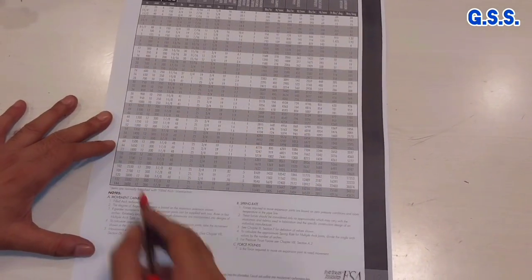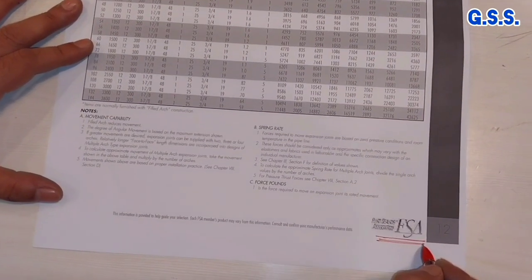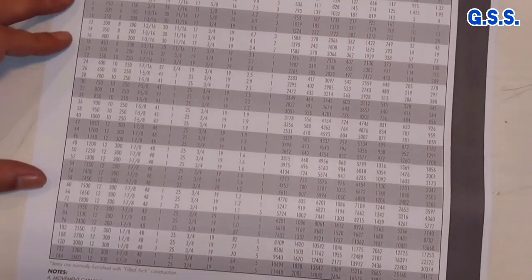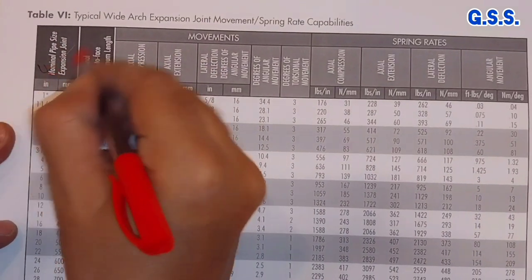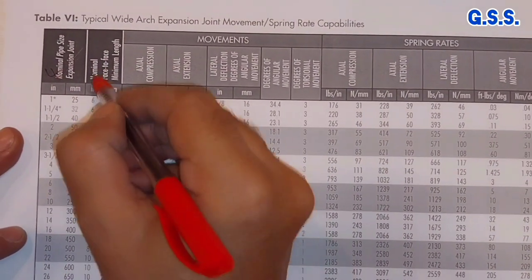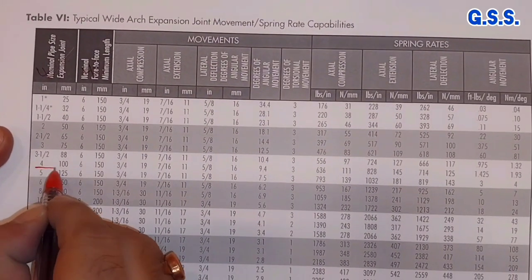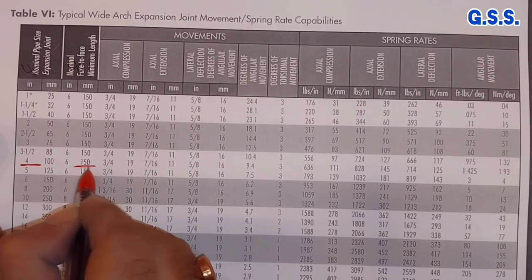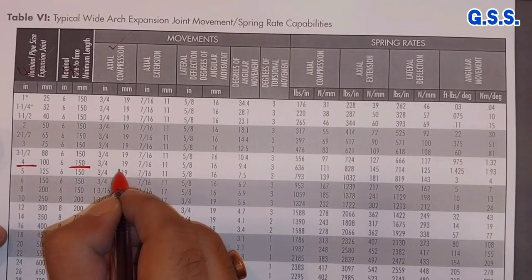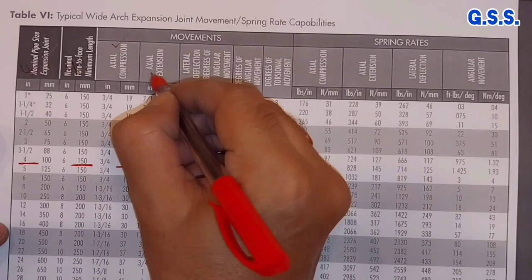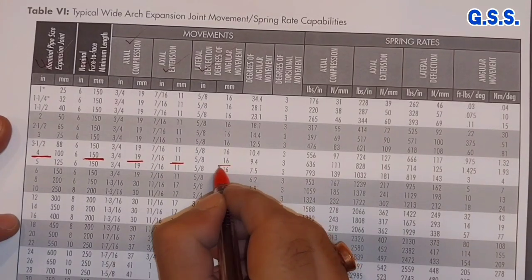This page is the relevant page of FSA standard. This is Fluid Sealing Association. So, in FSA standard, these parameters are indicated. This is nominal size of expansion joint. This is nominal face-to-face length, say for 4 inch. This nominal face-to-face length is 150 millimeter. And allowable axial compression is 19 millimeter. Allowable axial extension is 11 millimeter. Lateral deflection is 16 millimeter.